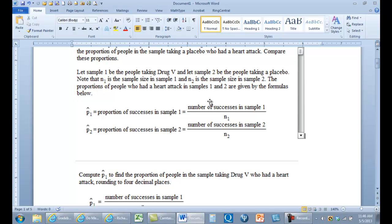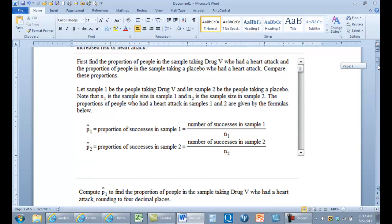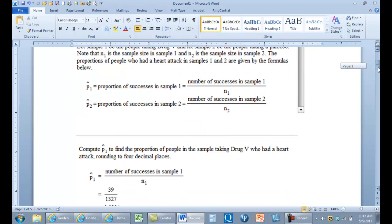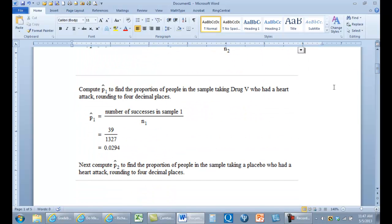And it's what we sampled here. And we sampled 39 out of something, out of 1327. Here we go. So our P-hat 1 or P-1-hat, whatever you want to call it, is 0.0294.